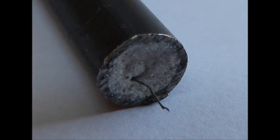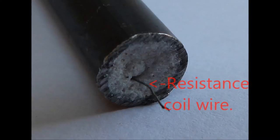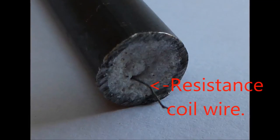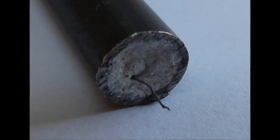we can see the heat producing component, the resistance coil wire, usually made of nichrome, an alloy of 80% nickel and 20% chromium.